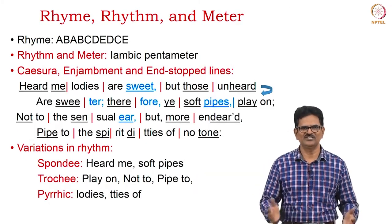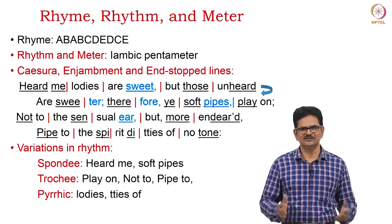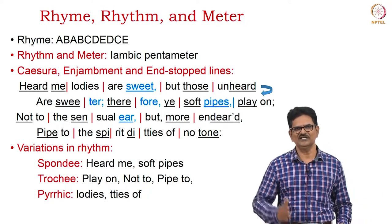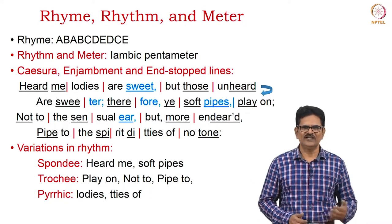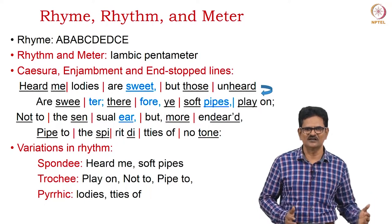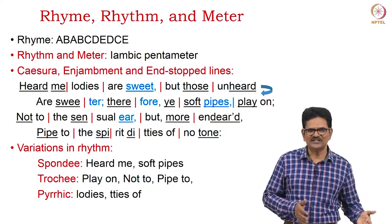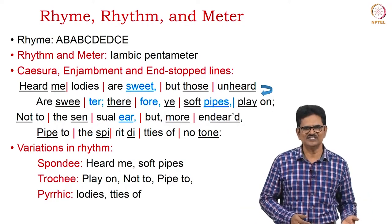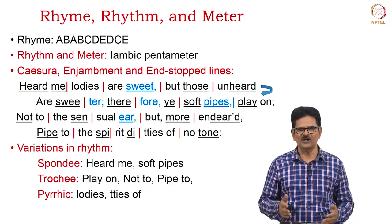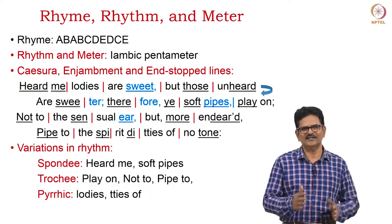We have wonderful rhyme, rhythm, and meter in this poem. The rhyme scheme is ABABCDEDCE. The rhythm and meter can be understood in one phrase: iambic pentameter. This is a traditional poem, and we have caesura, enjambment, and end-stopped lines. We can also understand the rhythmic variations: there is a spondee in 'heard me' and 'soft pipes,' a trochee in 'play on' and 'not to' and 'pipe to,' and a pyrrhic in the second part of 'melodies' and the second part of 'ditties.'